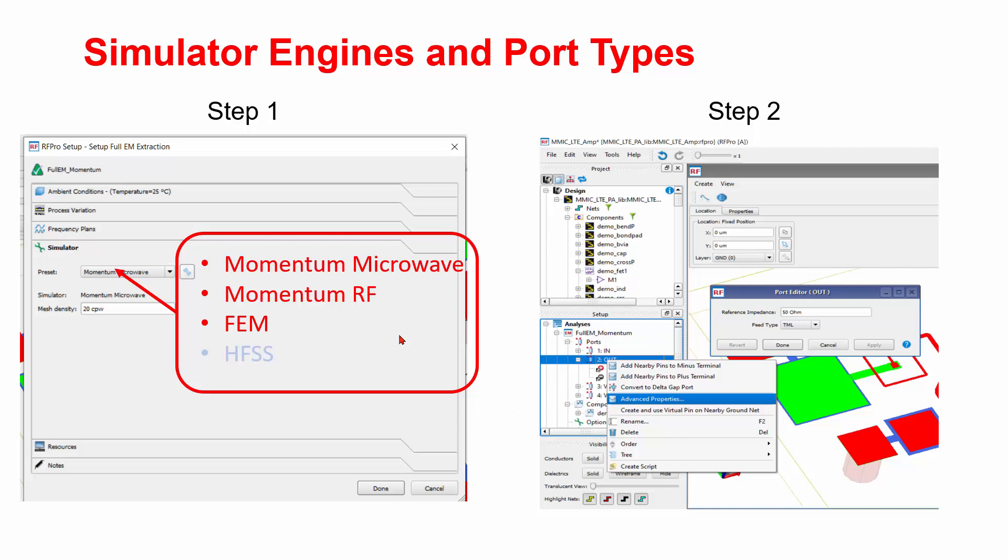You can hover your mouse over a port, then right-click your mouse to choose advanced properties. Then, in the new popup window, you will be able to see that there are six different types of ports.